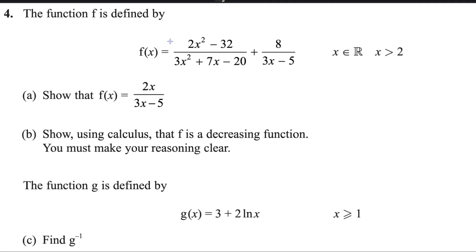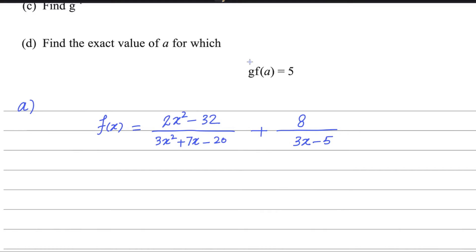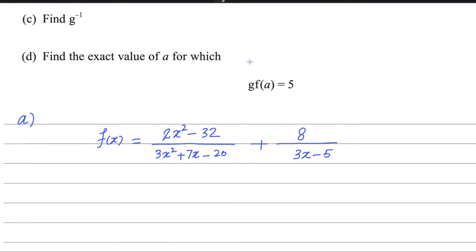We need to simplify these fractions. I already wrote the fraction here. In this question, what we need to do is factorize. You can take a common factor from the numerator, and in the denominator you can factorize by making pairs.